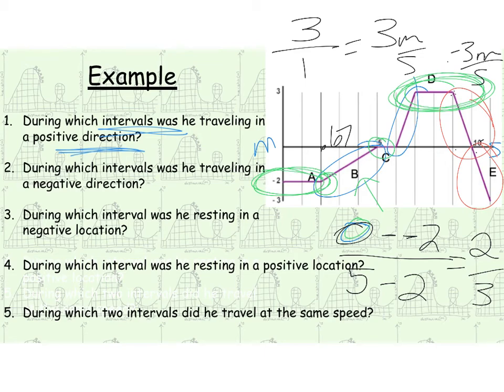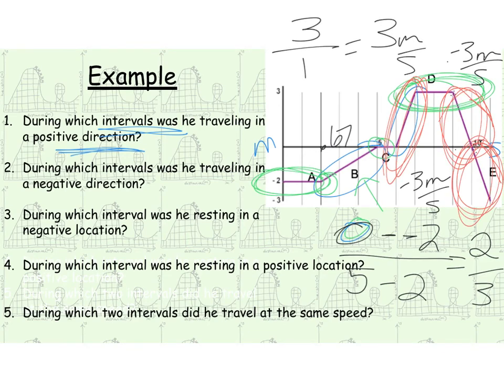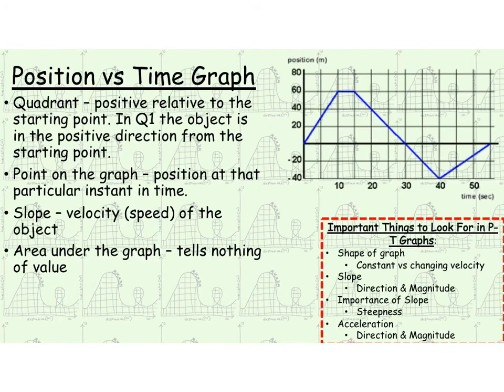All right, and then part E down here, again, you see the same thing, one second moving three. So this is another negative three meters per second. Okay, so basically, we have three of them that all are the same speed. So we have this one, this one, and this one.